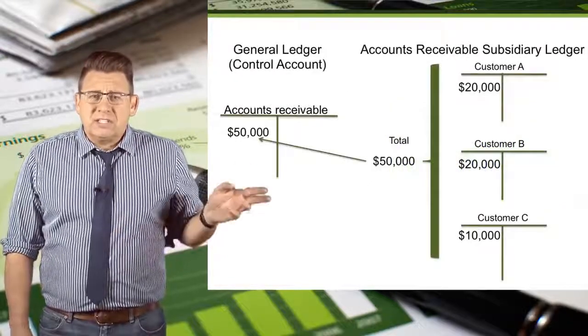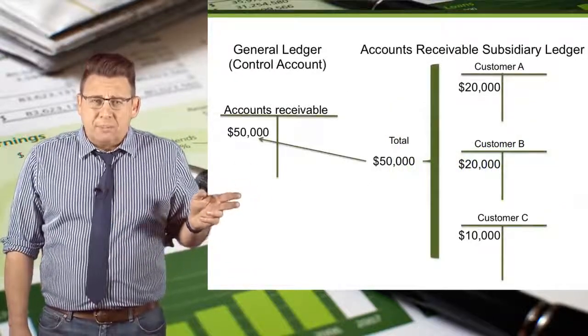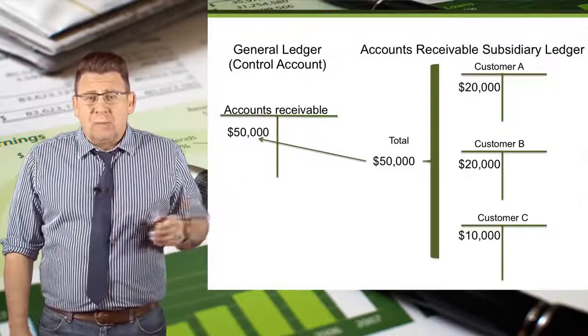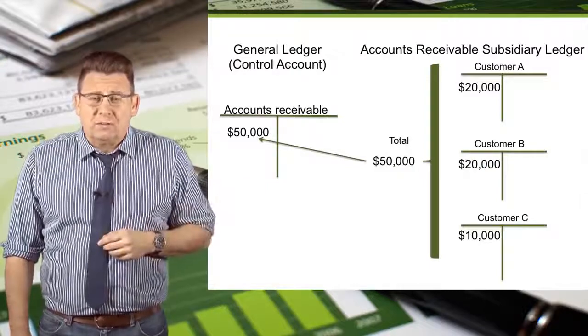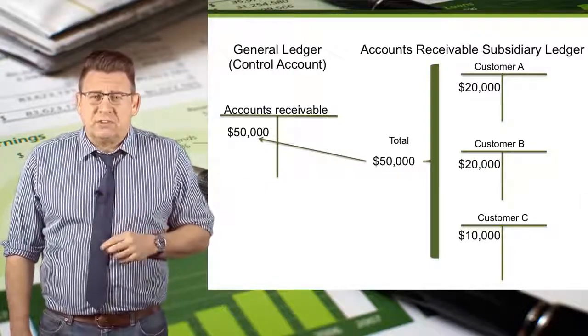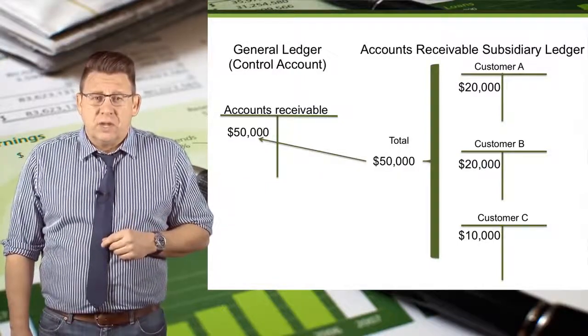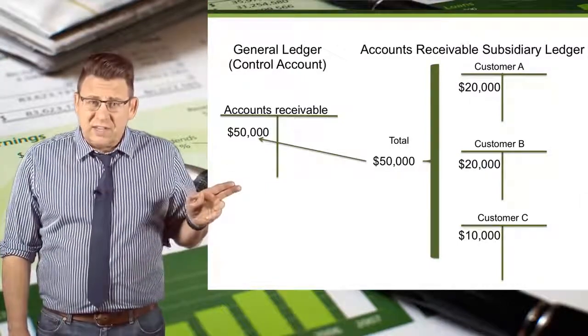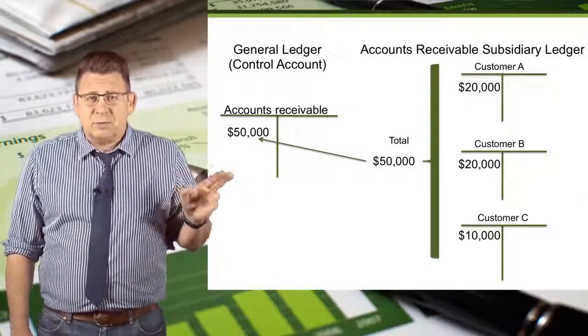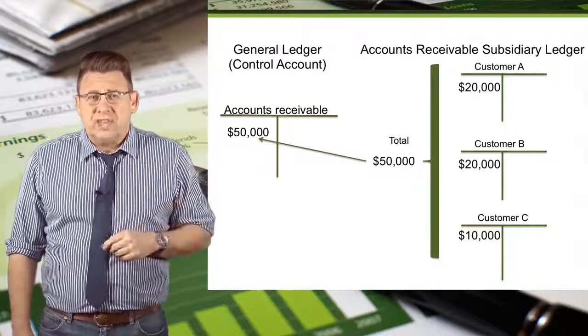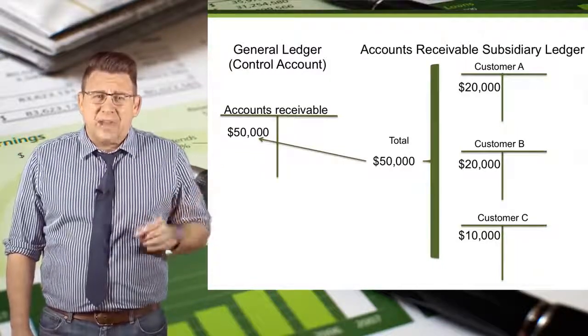Here is an example of that. The total amount of accounts receivable is $50,000. Here you can see that the customer subsidiary ledgers add up to that amount.